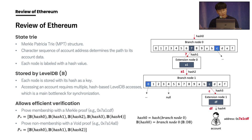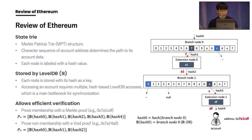Before we talk about Ethanos, let's review Ethereum for some background. Ethereum stores each account into the state tree, whose structure is a Merkle Patricia Trie, or MPT. The character sequence of an account address determines the path to each account data. Each node is labeled with a hash value, and this MPT is stored by LevelDB. Each node is stored with its hash as a key, and accessing an account requires multiple hash-based LevelDB accesses, which is the main bottleneck for synchronization.